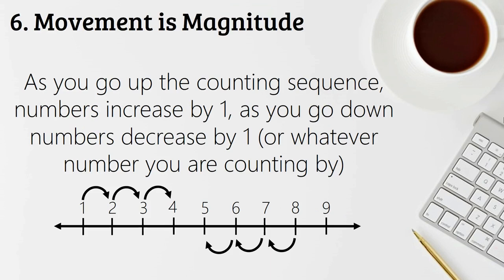Number six in our counting principles is movement is magnitude. So when you're counting in a sequence, their numbers are increasing by one. And if you go down, your numbers are decreasing by one, or it can be whatever you're counting by. If you're counting by twos, they're increasing by twos. And if you're going backwards by twos, they're decreasing by twos. You can often see this in a number line. As you're moving right along the number line, your numbers are increasing. And as you're going left along the number line, your numbers are decreasing.